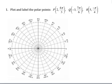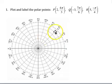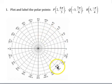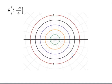One more: we have r=5, so 5 circles away from the center, and θ=-π/4. That will put us in quadrant 4. π/4 is 45 degrees, so -π/4 would be here — also equivalent to 7π/4. We just go out 5 circles: 1, 2, 3, 4, 5.